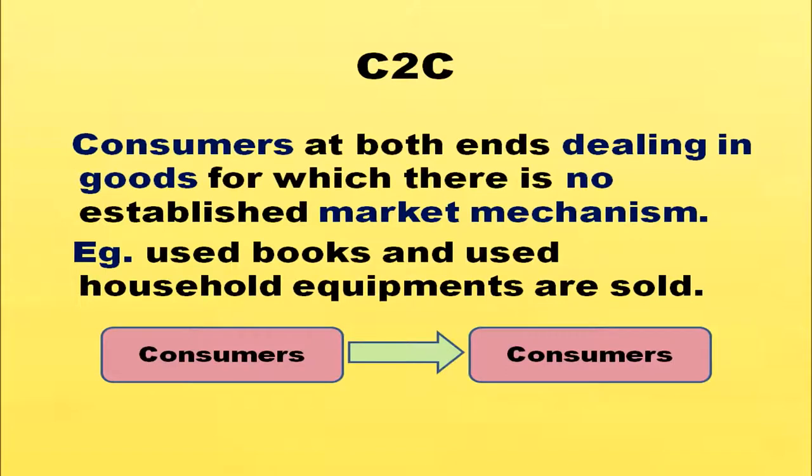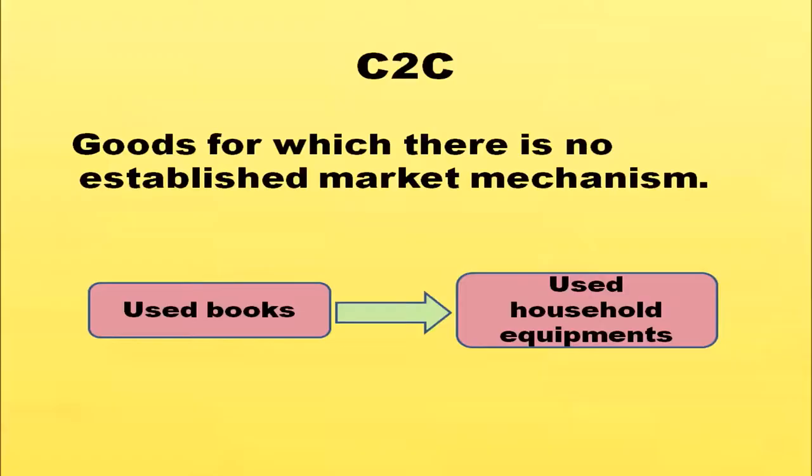In C-to-C, consumers at both ends are dealing in goods for which there is no established market mechanism. For example, one consumer wants to sell his old cell phone — he puts that information on the internet, another consumer sees it and requests to buy. C-to-C is very popular in the case of used books and used household equipment, where consumers contact each other directly.